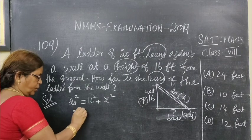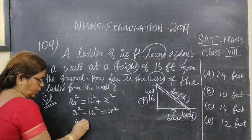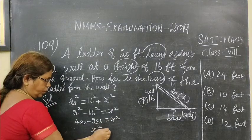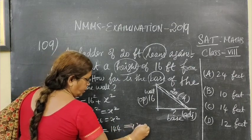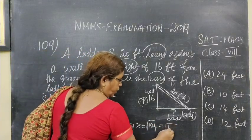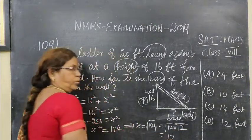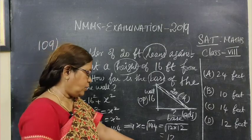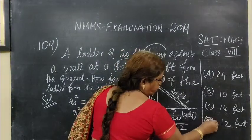Therefore, 20 squared minus 16 squared equal to x squared. This is 400, then 256 equal to x squared. Therefore x squared equal to 144 if you separate it. X equals root of 144. Root of 144 means 12 into 12, so it is 12. Selecting only the positive value, the answer for this is 12. Option D is the correct one.